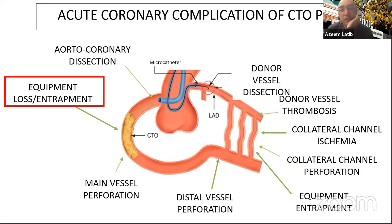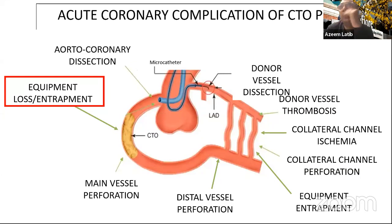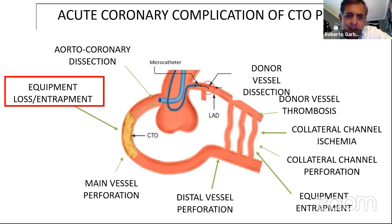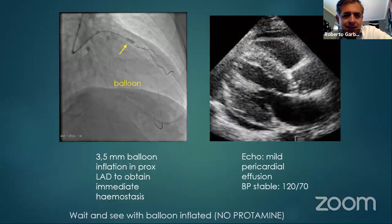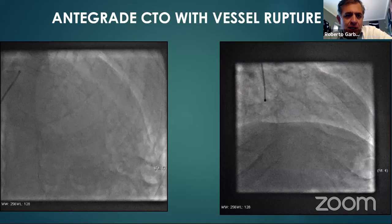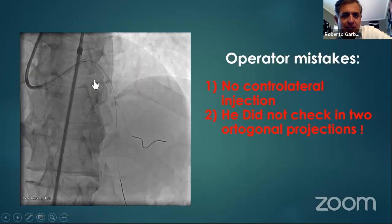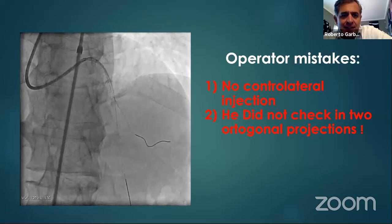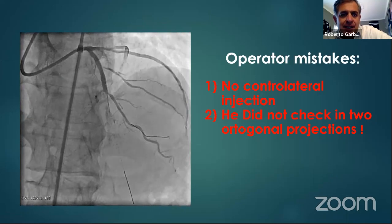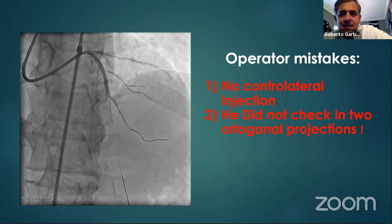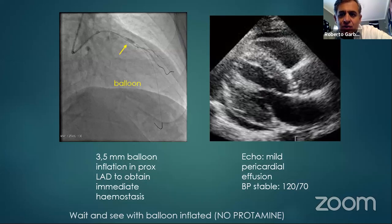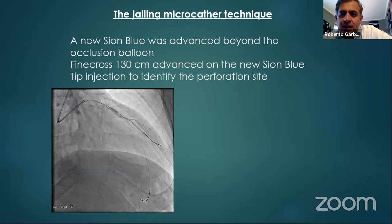For a more junior operator facing this situation: if you have the wire completely outside the vessel, you are in big trouble. You need to place a covered stent across the diagonal, covering the LAD-diagonal, and check the contralateral injection because perforation can increase even after placing the covered stent in the diagonal branch. In that case, the patient may need to go to surgery.